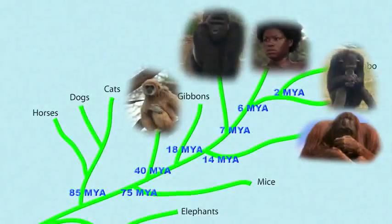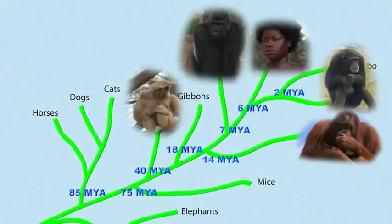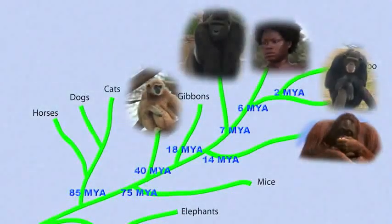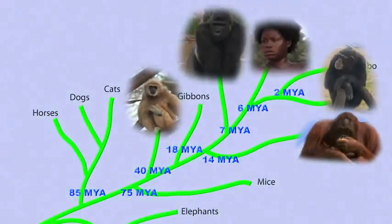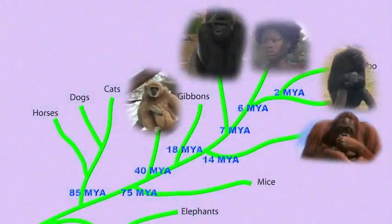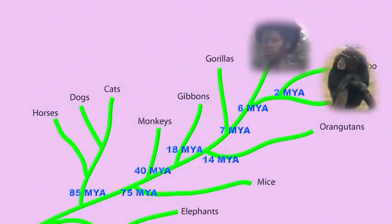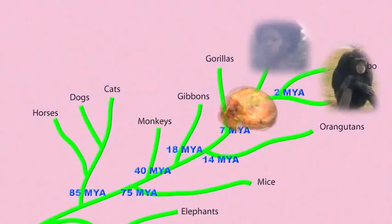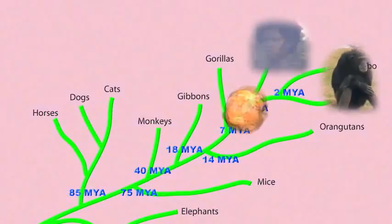A common misconception is that some modern species are descended from other modern species. This is rarely the case. Instead, closely related modern species evolved from a common ancestor — that is, neither one nor the other. Humans did not come from chimps. Both humans and chimps came from a creature that had more primitive features than either modern humans or modern chimps.